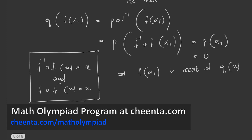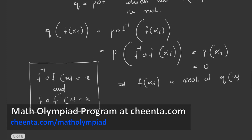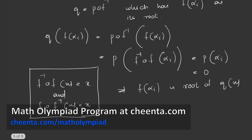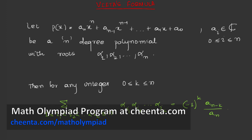Now we will move on to Vieta's formula, which is one of the most important formulas used in polynomials. Let p of x be our polynomial: a_n x to the power n plus a_{n-1} x to the power of n minus 1 plus dot dot dot a_1 x plus a_0. Here we assume each of these a_i is actually a complex number, so this result is going to be very general over both reals as well as complex coefficients.